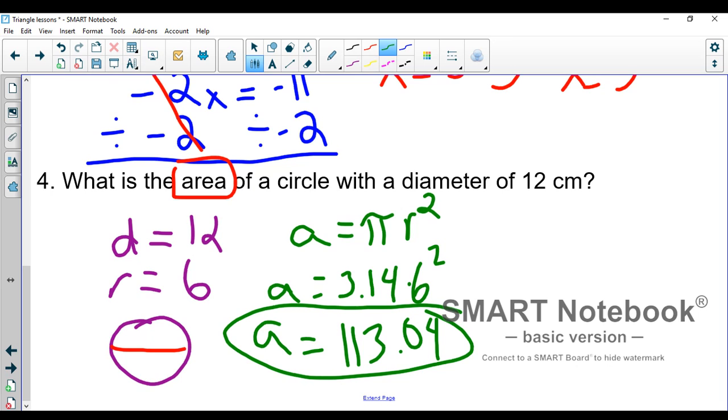Now, if you didn't have a calculator and you needed to estimate, you would just do 3 times 36 which gives you 108. So it would be a little bit off if you don't have a calculator.